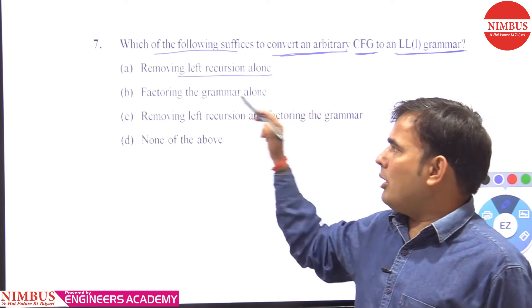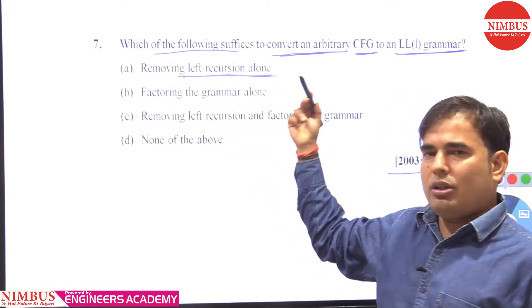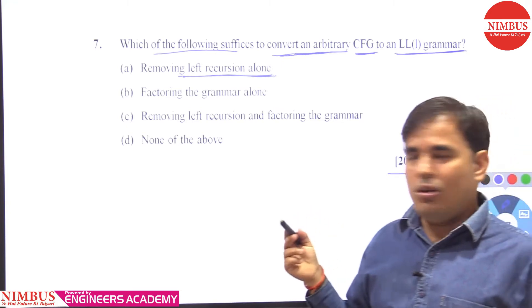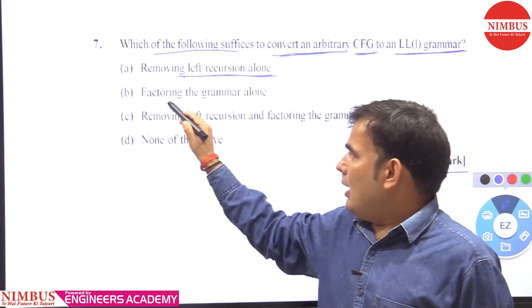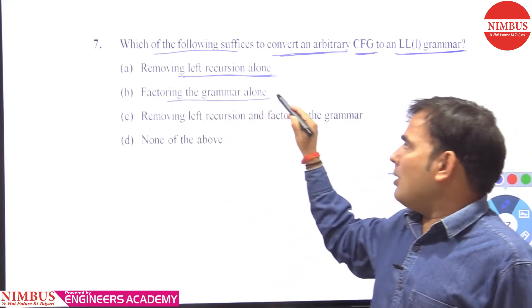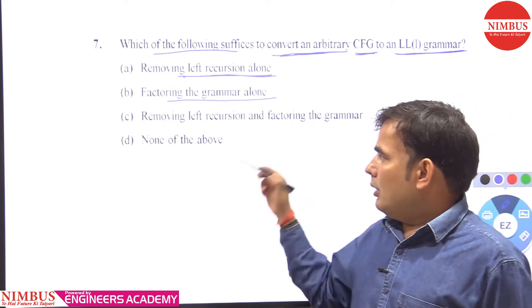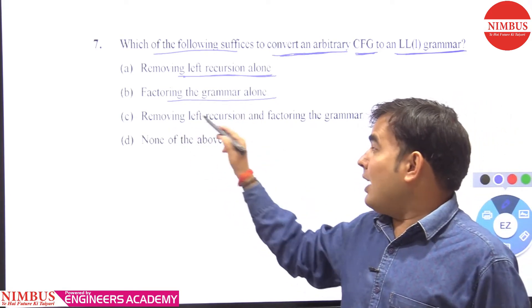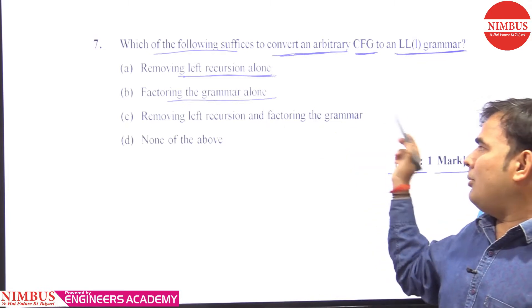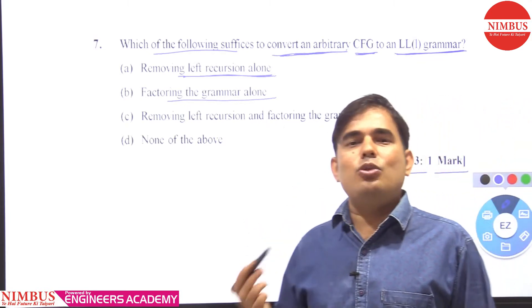When you remove left recursion alone, you cannot guarantee that the grammar is converted into an LL(1) grammar. Option B says: factoring the grammar alone. Option C says: removing left recursion and left factoring from the grammar.